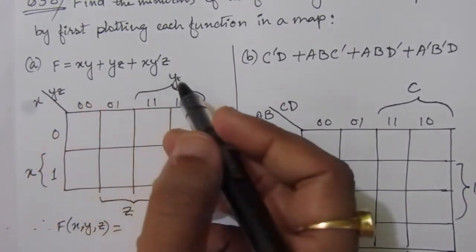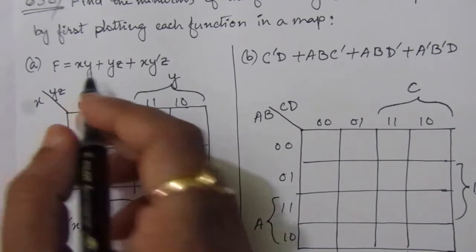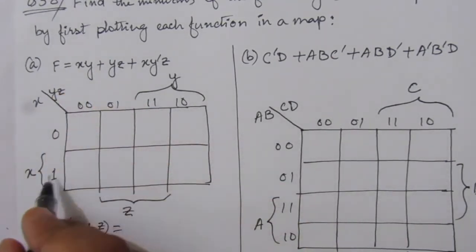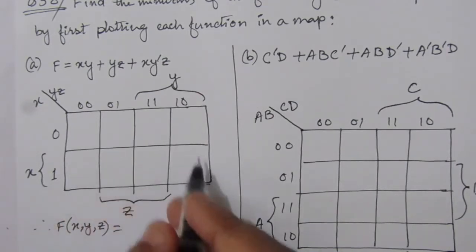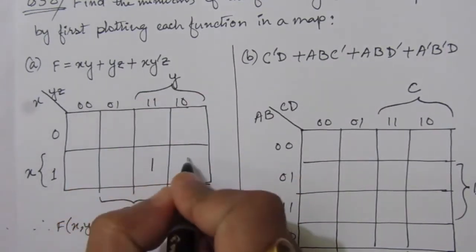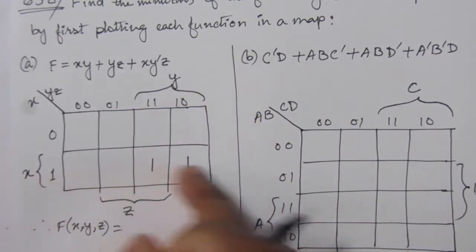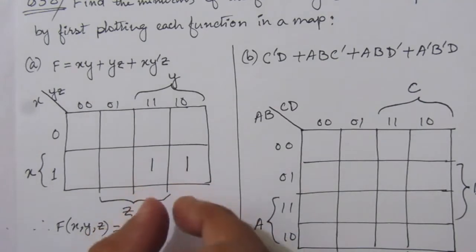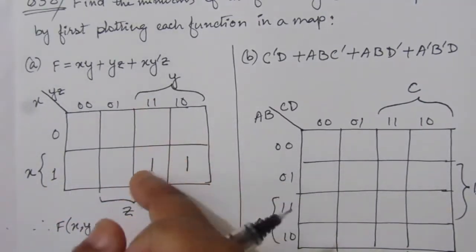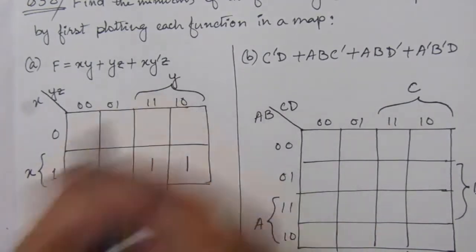Here we have three input variables x, y, z, so it will be a three-variable map. The first term is xy. x is this row and y is these two columns, so we have to put one and one here, because y represents these two columns and x represents this complete row. The common squares of this second row and the third and fourth column are these two.